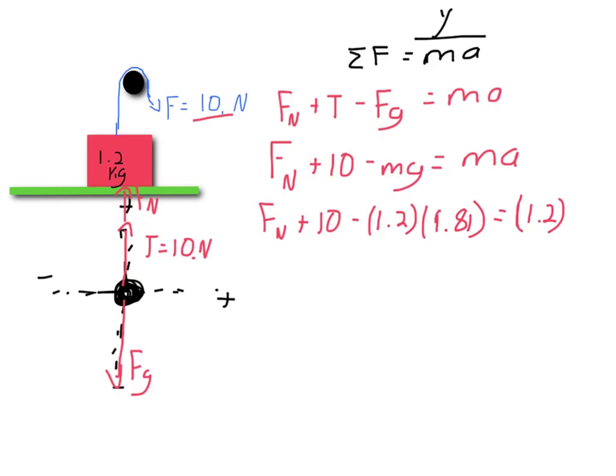We are in equilibrium, meaning the acceleration is 0. So this entire term over here on the right is going to become 0. Fn plus 10 minus what comes out to be about 11.77 equals 0. So Fn minus 1.77 approximately equals 0, meaning my normal force has to be equal to, I've got to be careful with sig figs, I only have two here, about 1.8 newtons.